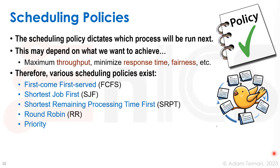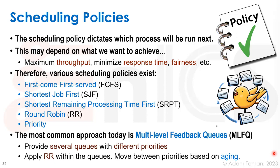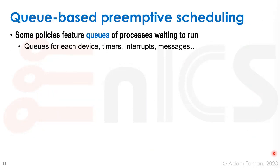Scheduling policies dictate which process runs next, depending on what we want to achieve: maximize throughput, minimize response time, or ensure fairness. There are many policies: first come first serve, shortest job first, shortest remaining processing time first, round robin, and priority-based scheduling. The most common approach today is multi-level feedback queues, or MLFQ, which provides several queues each with different priorities, applying round robin or other policies within each queue, and moving processes between priority levels based on aging.